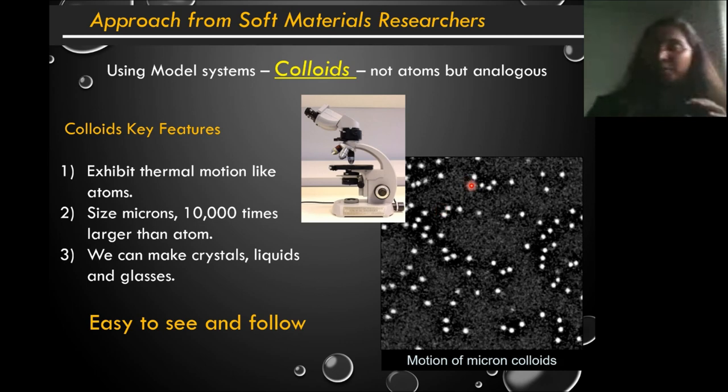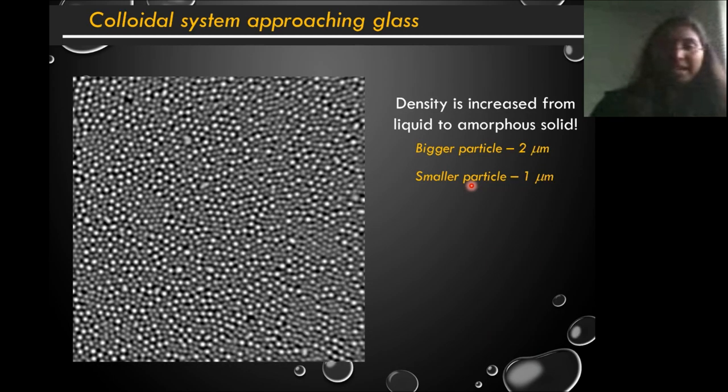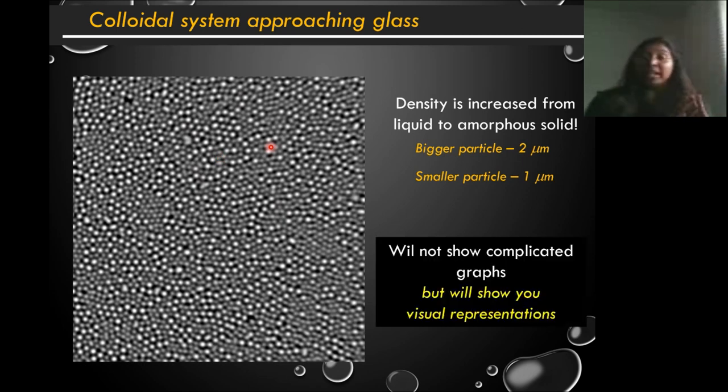Now we use these systems but you remember for it to go from a liquid to a glass it needs to increase the density, so we do increase that. Now this is a system or an example of an image where we increase the density. So just to make a glass we basically use two kinds of particles, the bigger ones are two microns, smaller one is one. This is just a minute detail but the important point is now we can see and we can follow, which means we can actually do some nice interesting glass physics, but for the purposes of this I'm not going to show complicated graphs or analysis. I'm going to show you some simple visual representations because we can see them, so let's do that.